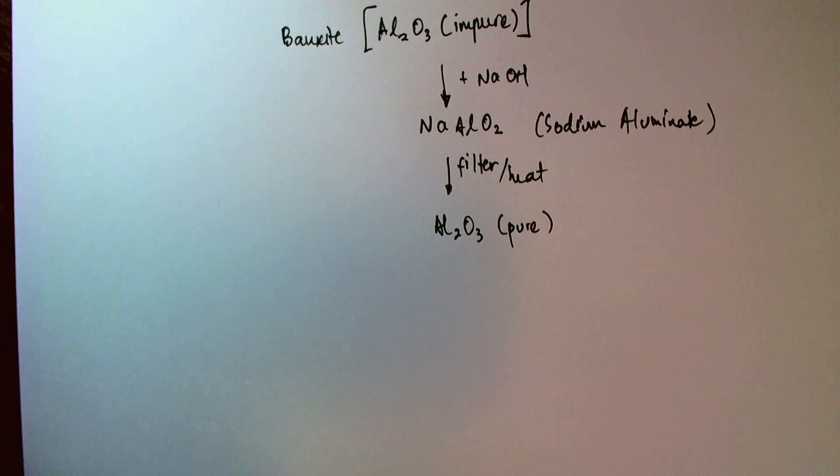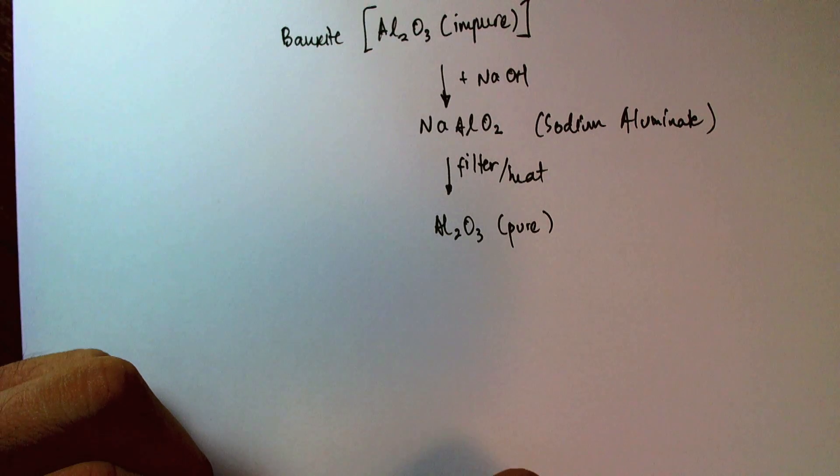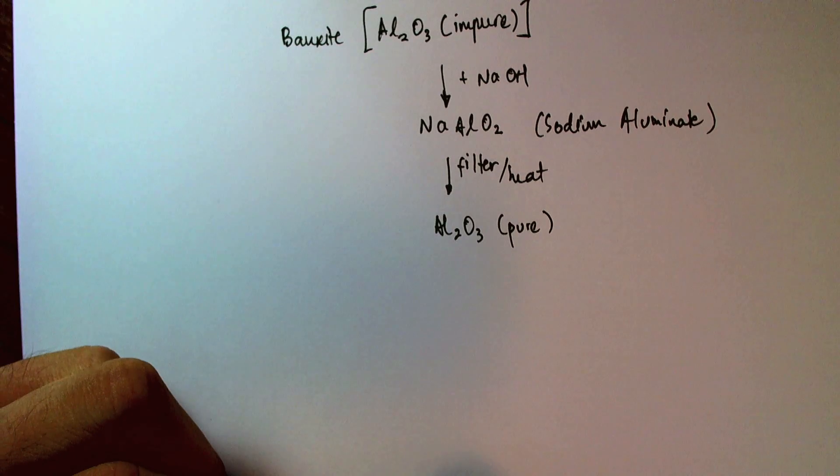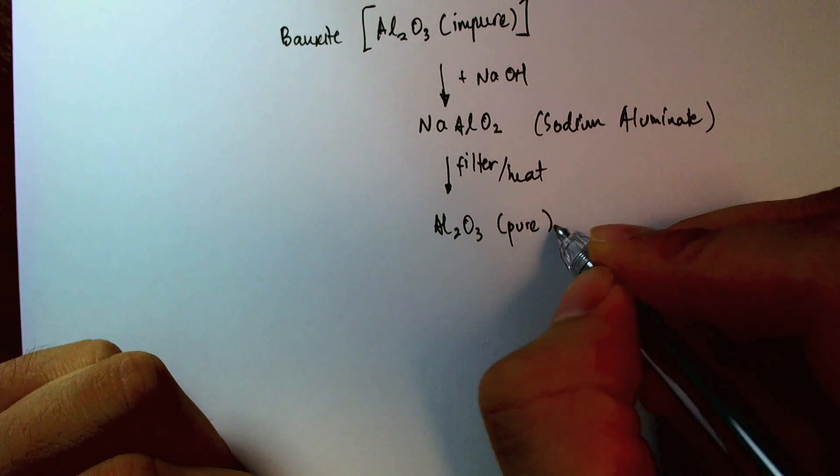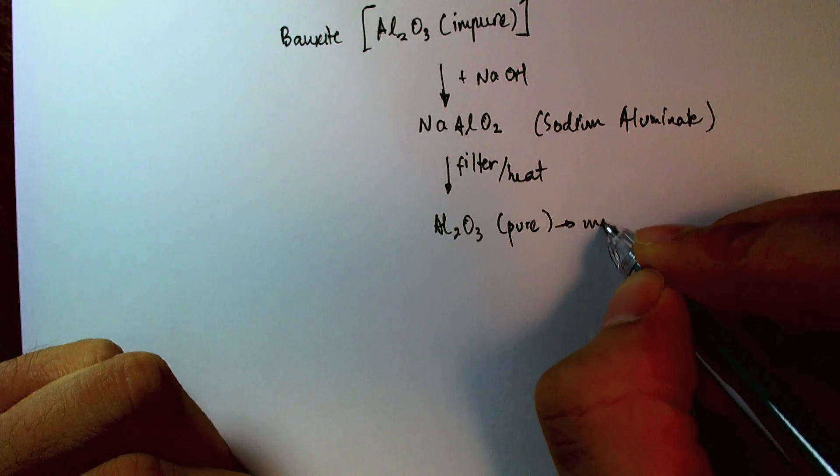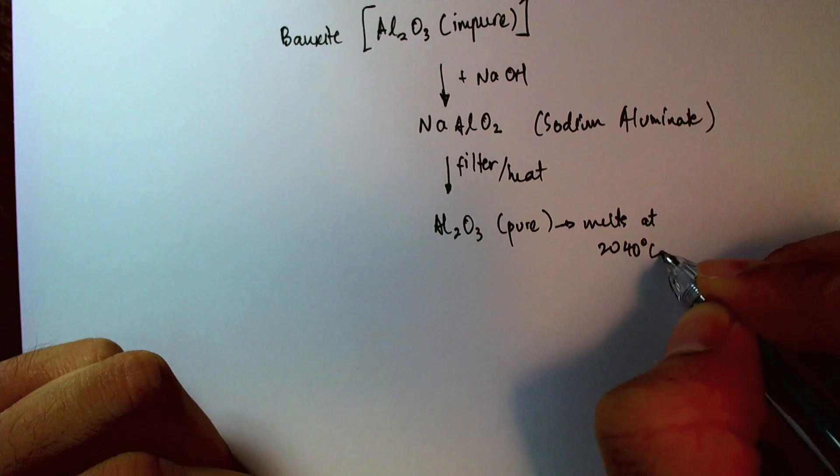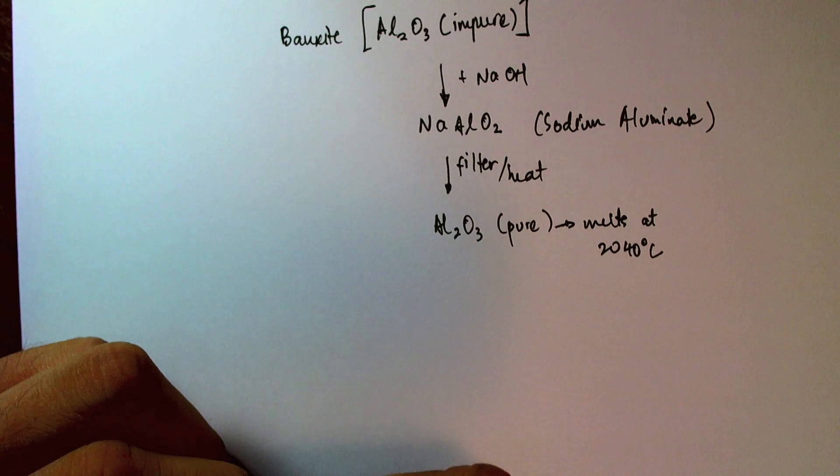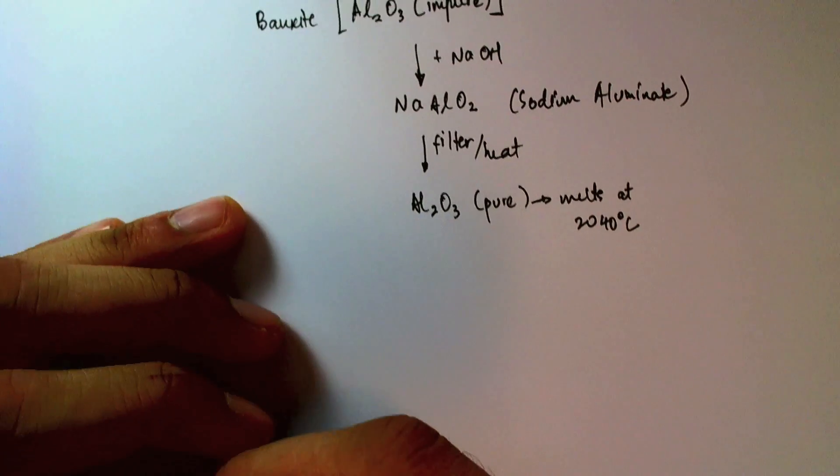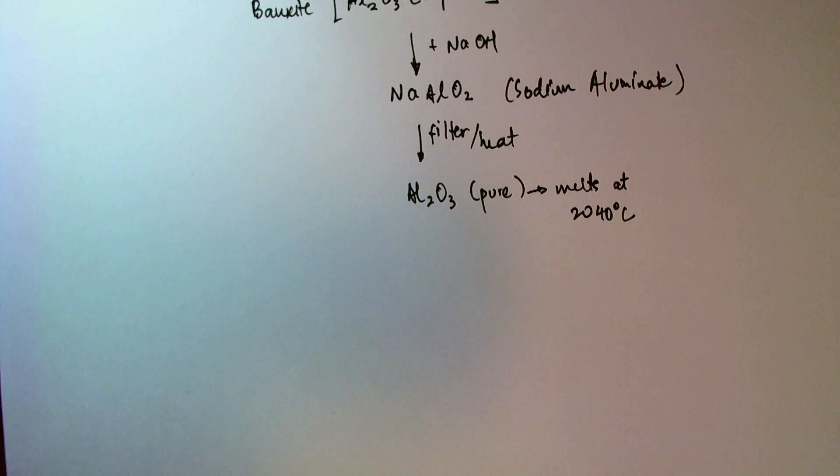Now remember that we can only electrolyze molten or aqueous substances. Aluminum oxide turns out to have an unusually high melting point, about 2,000 degrees Celsius. Now as you can imagine, it would take an enormous amount of heat to melt aluminum oxide, and hence require a lot of energy, and energy is money.